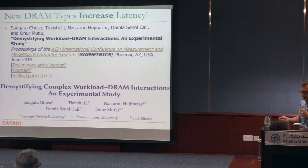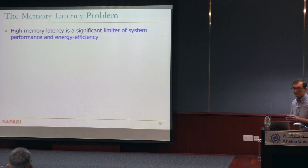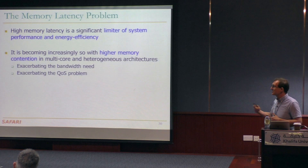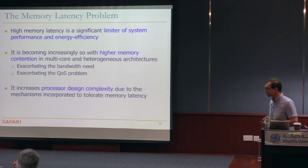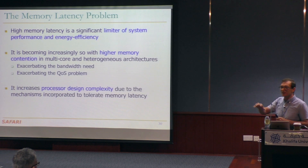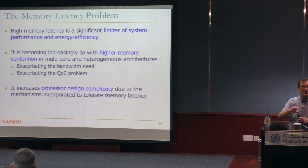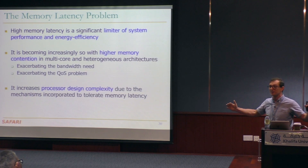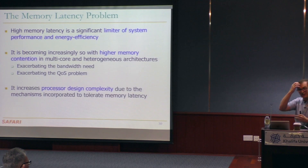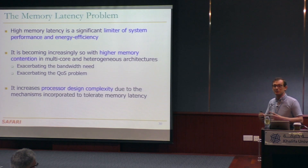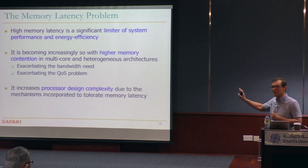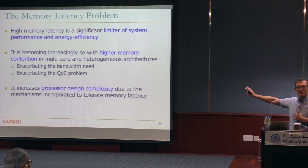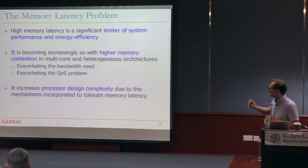We've released a lot of the source code related to this online. Main memory latency is a significant limiter of system performance and energy efficiency, and it's becoming increasingly so with higher memory contention, multi-core, and other genius architectures and accelerators. It exacerbates bandwidth need, exacerbates the predictability and quality of service problem, and increases processor design complexity because people try to incorporate latency-hiding and latency-tolerating techniques — heavy multi-threading in GPUs, heavy out-of-order execution, caching, prefetching, the huge cache hierarchies. They're all there to tolerate memory latency. Because of the memory problem, we're adding a lot of complexity to our systems, increasing energy waste — a vicious cycle.